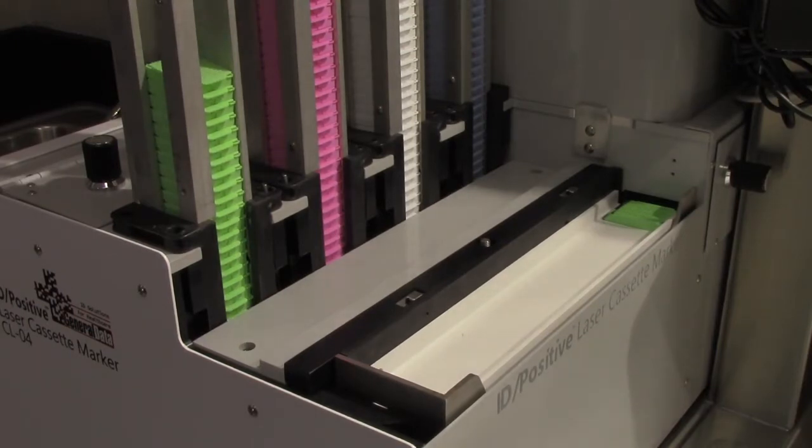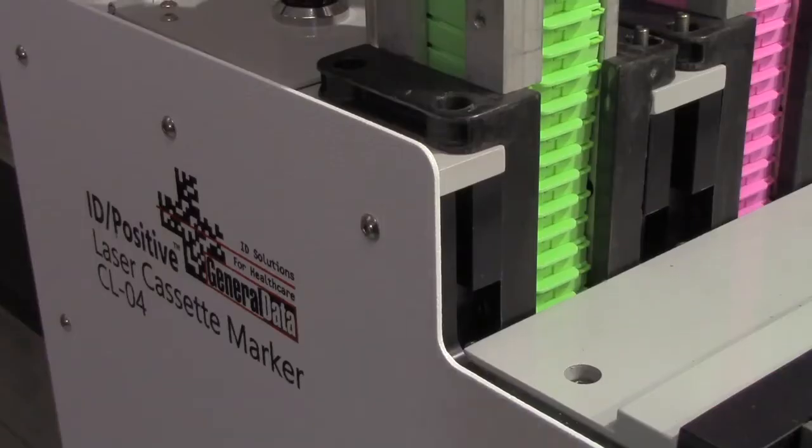Workflow efficiencies are improved by using a distributed printing model, where tissue blocks are positively identified and cassettes are labeled as they are produced at each station.